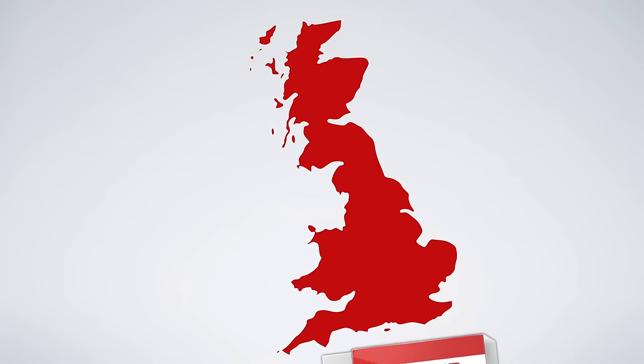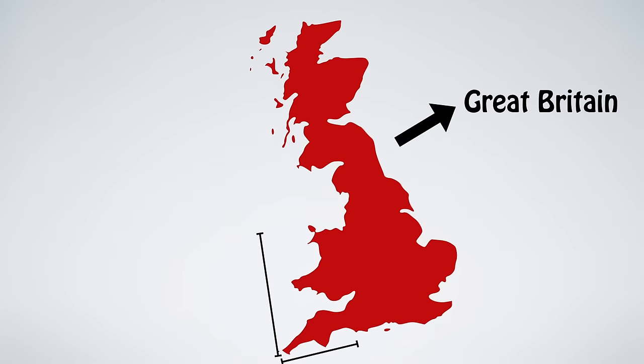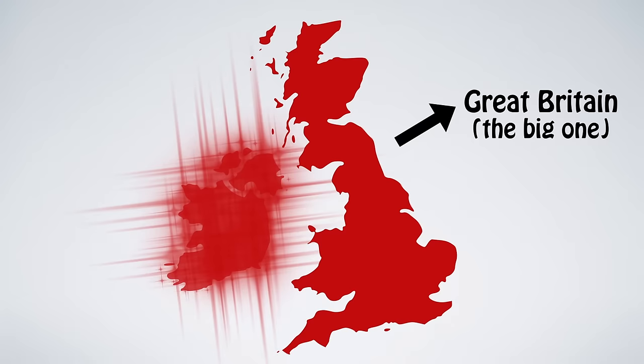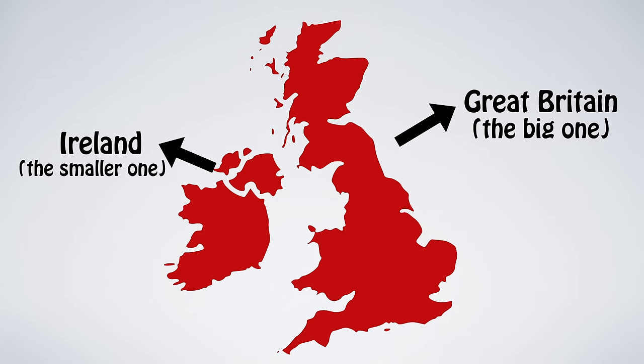The biggest island of the two is called Great Britain since it's the biggest of the British Isles. The smaller one is Ireland, also known as the Emerald Isle, since it's famous for its green fields and nature.